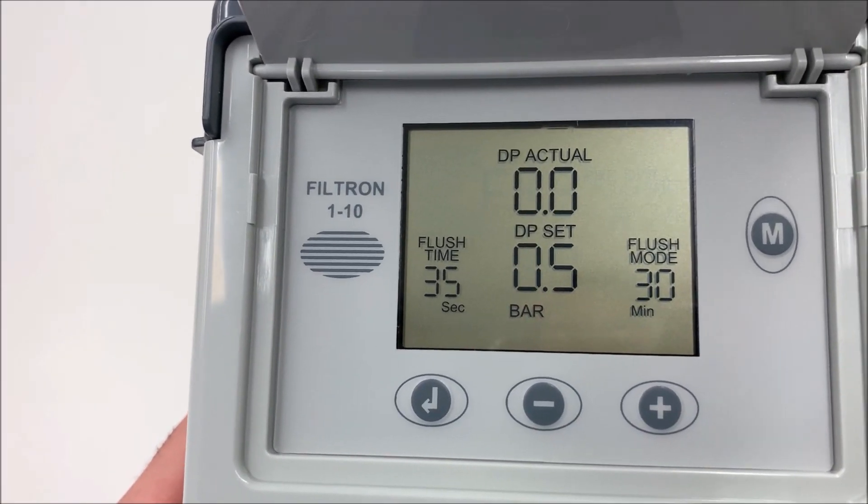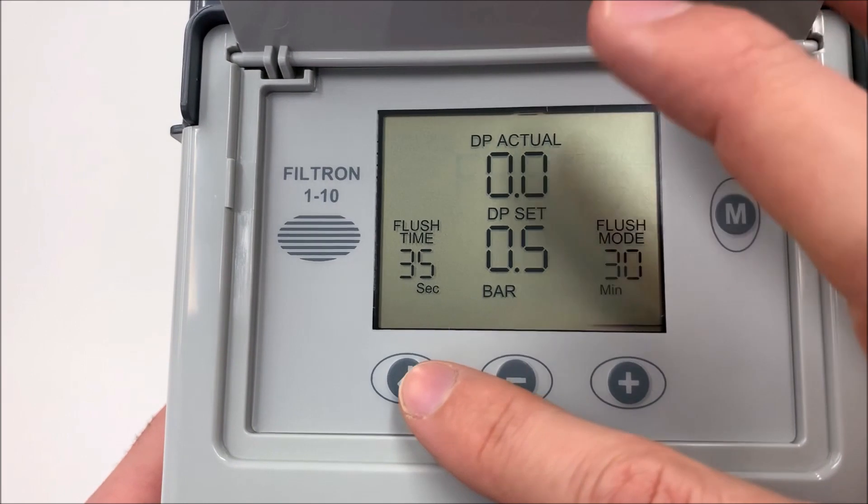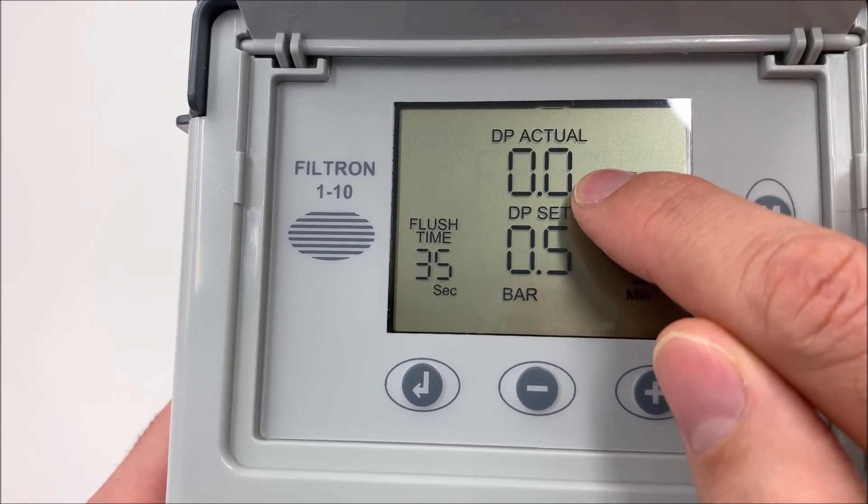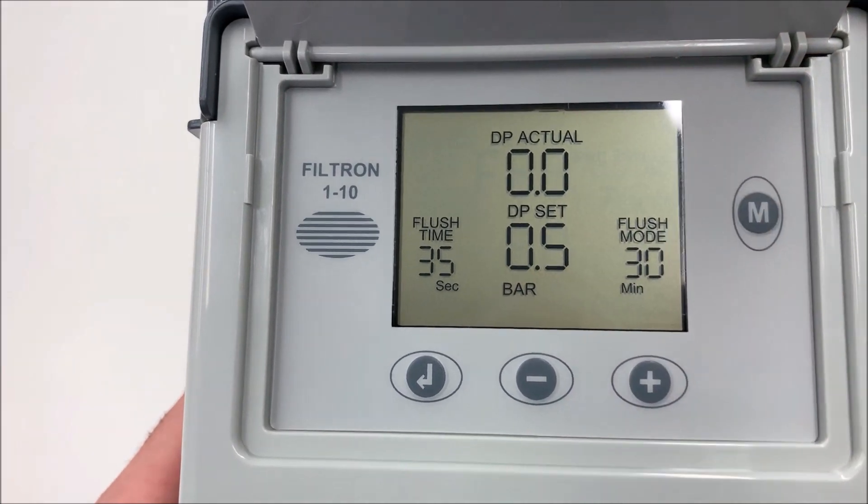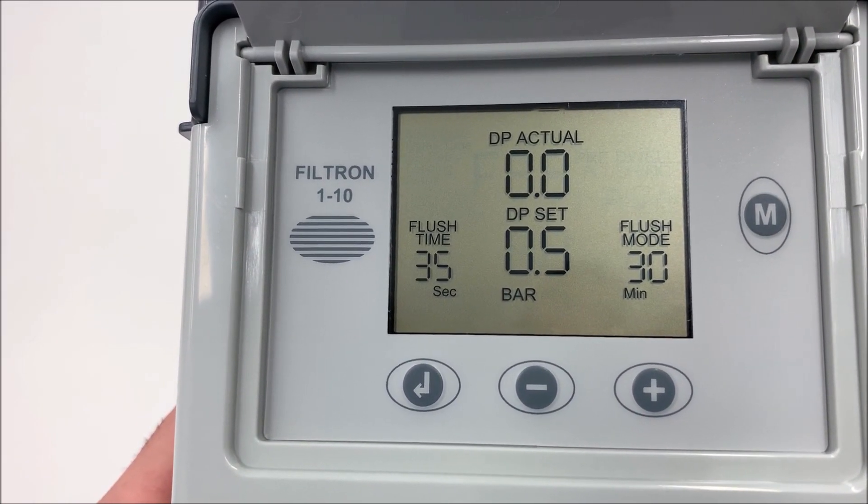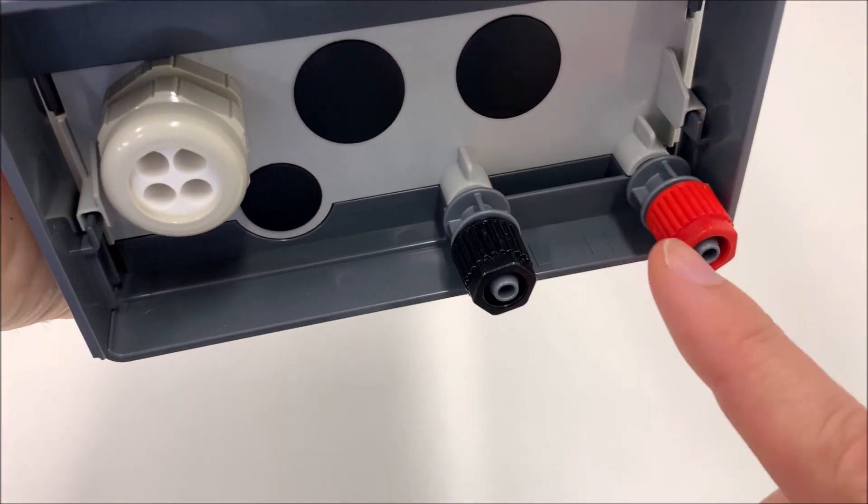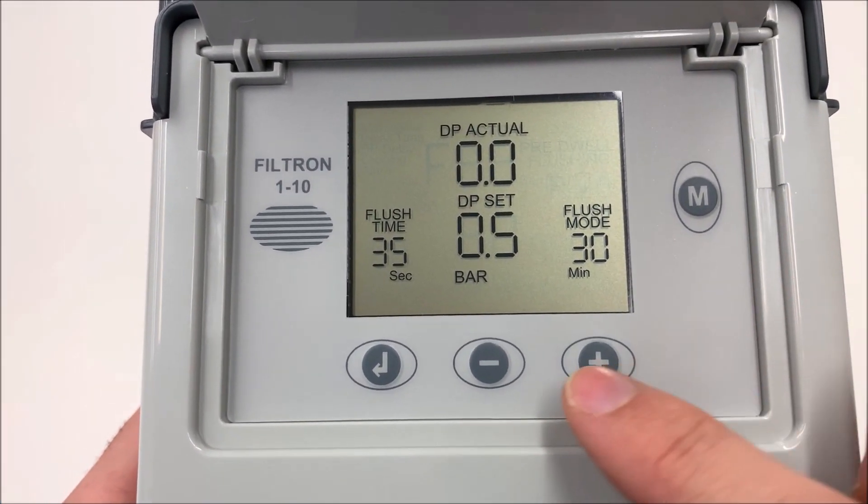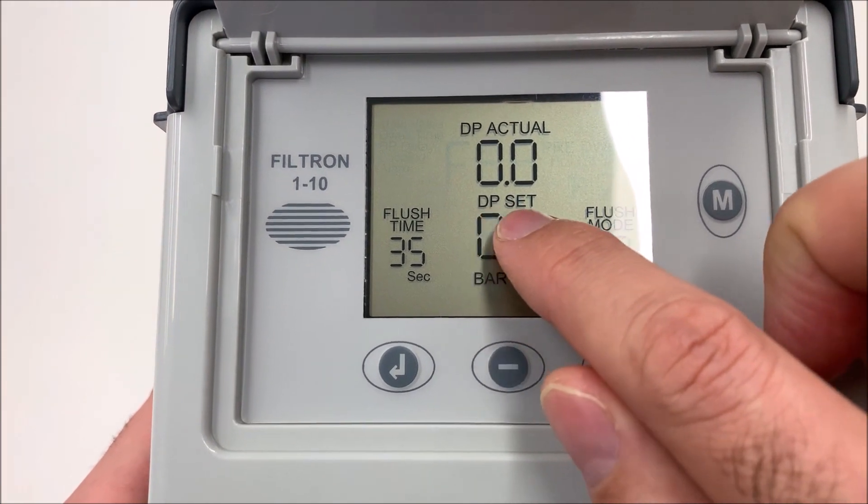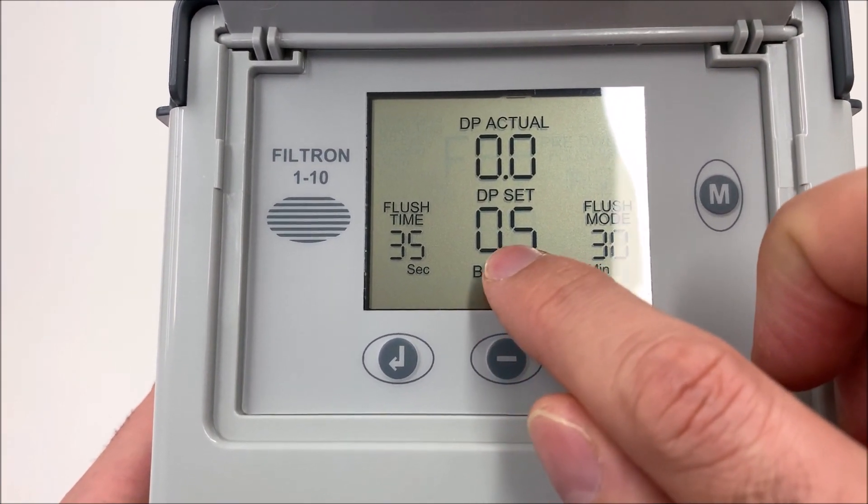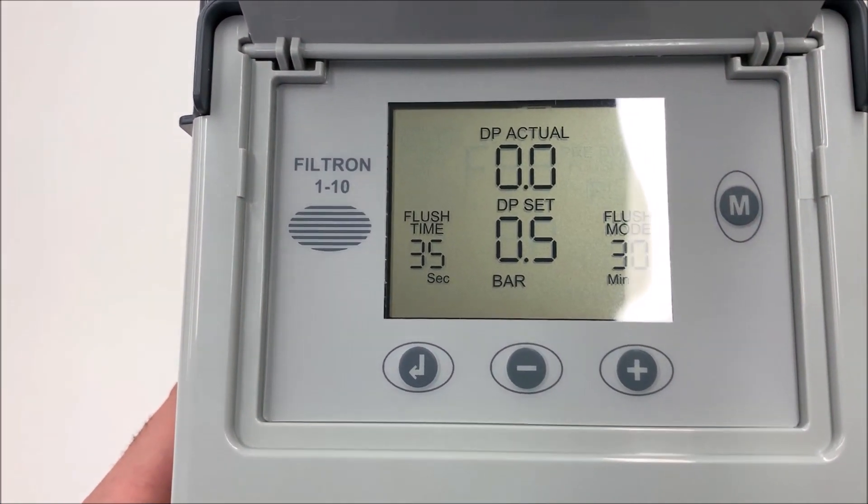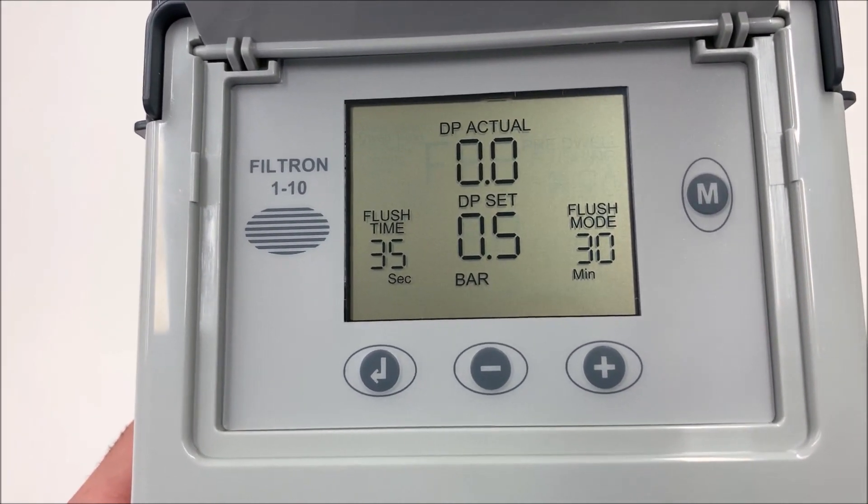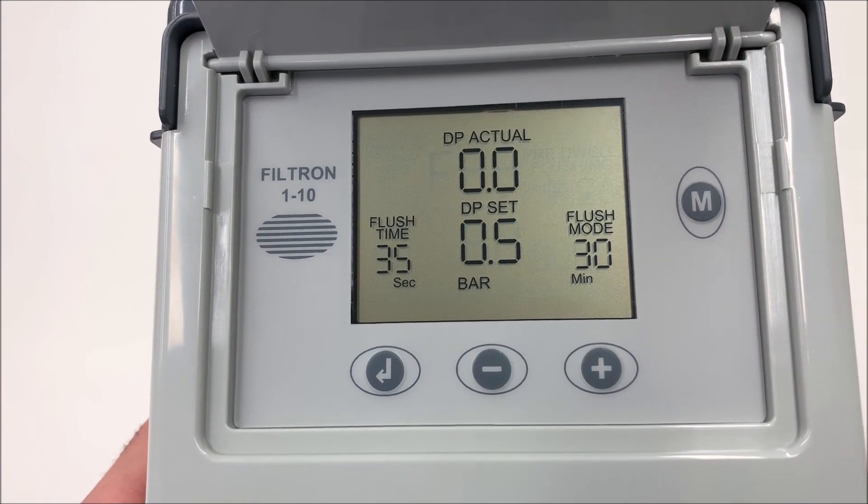We will see now how to manage all the buttons on the screen here. The first thing you will see here is the DP actual, the current differential pressure. Our differential pressure manometer is reading. The second thing is the preset DP value. In that case is 0.5. That means that when we arrive to 0.5 bar differential pressure, the controller will start the backwash.